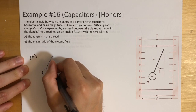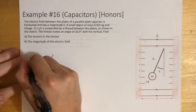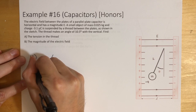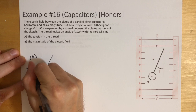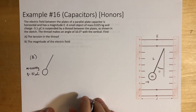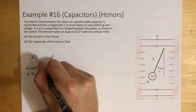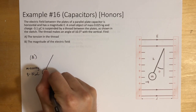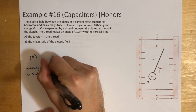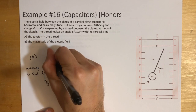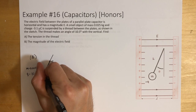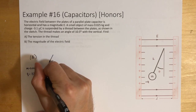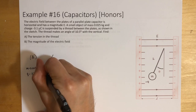We have this mass here, 0.025 kilograms, with a charge of negative 3.1 microcoulombs. For the free body diagram, we're going to have a force of gravity going straight down, a force of tension going along the string, and a force of electricity — which will be attracted and going towards the left.